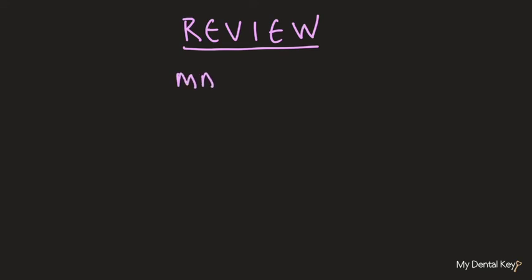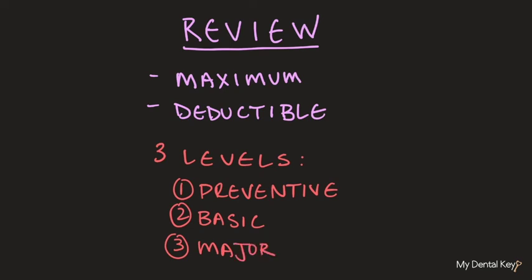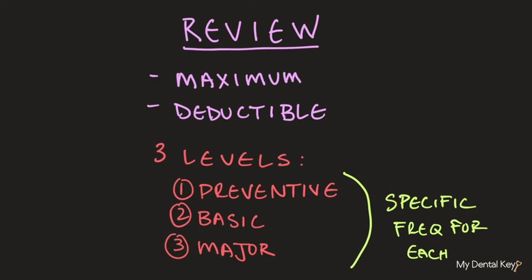Let's do a quick review of the basic breakdown of what a provider should know about an insurance plan. The first takeaway is that each insurance plan has a maximum allowed benefit and a deductible. Second is that each dental plan has three main coverage levels: preventative/diagnostic, restorative basic, and restorative major. These three categories encompass specific procedures. Finally, remember that each individual procedure has an allowed frequency and a benefit year for the insurance company to cover that procedure. In the next video, we'll talk about basic codes for procedures that you should know, as well as some tips and tricks for memorizing them. Until then, thanks for learning with us!